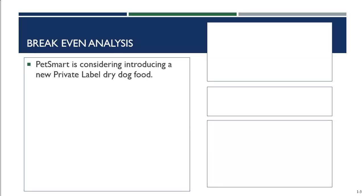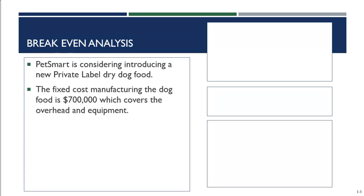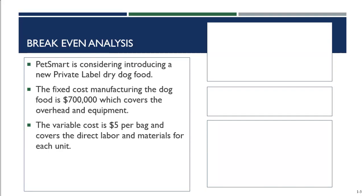PetSmart wants to know how many bags of pet food they need to sell in order to make a profit. If they're not going to be able to sell enough bags and make a profit, they probably shouldn't introduce the new product. PetSmart works with a manufacturer, and the fixed cost is $700,000, covering all overhead and equipment needed to get manufacturing going.